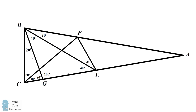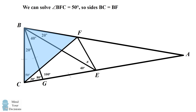Now let's consider another triangle. Two of its angles are 50 degrees and the other angle is 80 degrees, so the third angle — using the 180-degree rule — is BFC, equal to 50 degrees. Once again we have an isosceles triangle, and therefore the two sides opposite those equal angles must be equal to each other: BC equals BF.